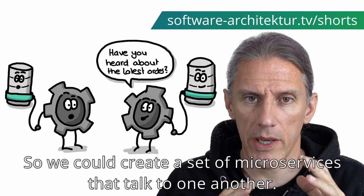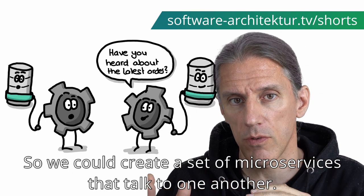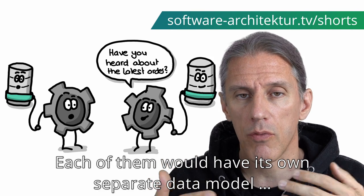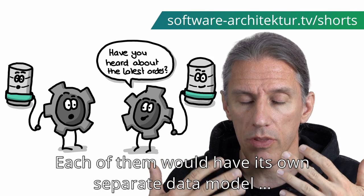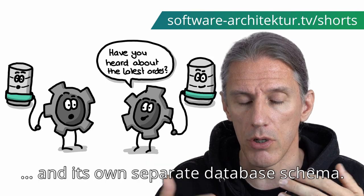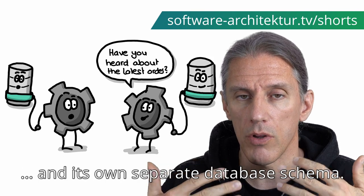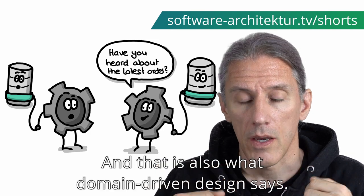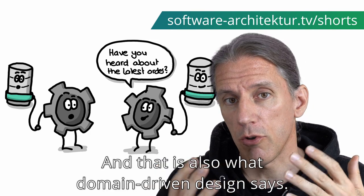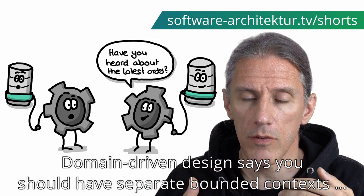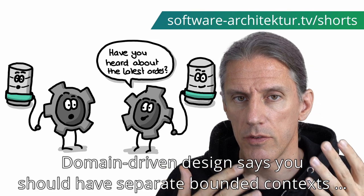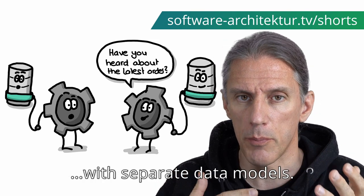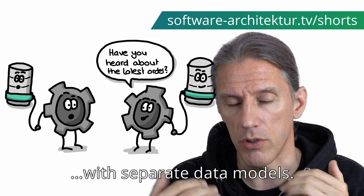So we could create a set of microservices that talk to one another. Each of them would have its own separate data model and its own separate database schema. And that is also what Domain Driven Design says — you should have separate bounded contexts with separate data models.